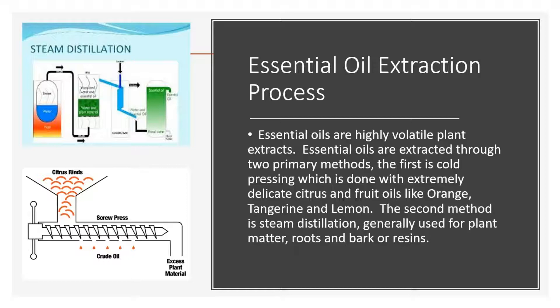Steam distillation is done with roots, bark, resins — those types of things. That's how they extract their oils from plants. Orange is an example that would be cold pressed, and lavender would be an example of an oil that would be steam distilled.